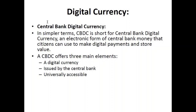Digital currencies can be of two types: centralized or decentralized. First, we are going to discuss the centralized system, known as CBDC — central bank digital currency. A central bank, also known in some countries as a state bank, is owned by the government and oversees all other banks in a country. It is responsible for producing new currency notes, coins, and so on.